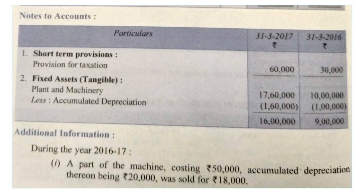Notes to accounts, point one: short-term provisions — provision for taxation. Current year taxation of rupees 60,000 will be added in NPBT. The 2016 tax of rupees 30,000 will be subtracted in cash flows from operating activities.